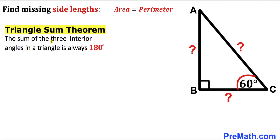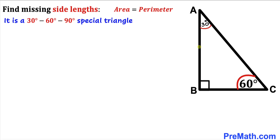According to this theorem, the sum of three interior angles in a triangle is always 180 degrees. We know this angle is 60 degrees and this angle is 90 degrees, so therefore this angle must be 30 degrees. We conclude that triangle ABC is a 30-60-90 special triangle.